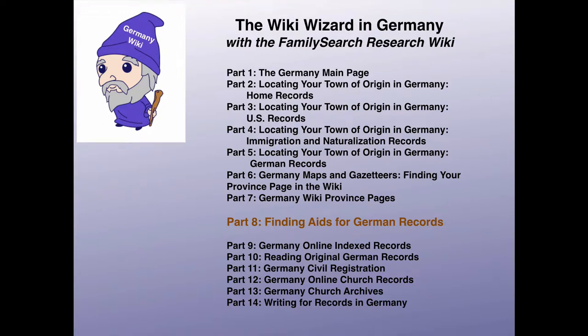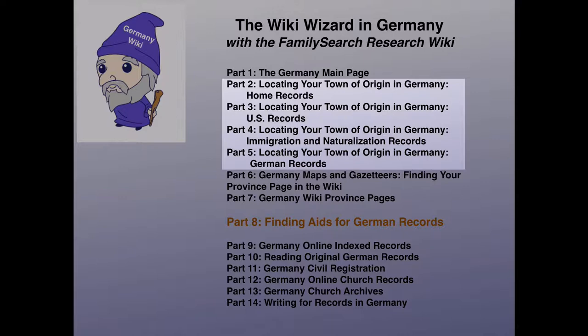This is the eighth part of a series intended to help you learn how to use the features of the FamilySearch Research Wiki to locate genealogical records about your ancestors who lived in Germany. At this point, you should have discovered the name of your ancestor's town in Germany. If you don't know that yet, you need to go back and watch some of the earlier videos in this series that will teach you how to look for that in the records in the United States.